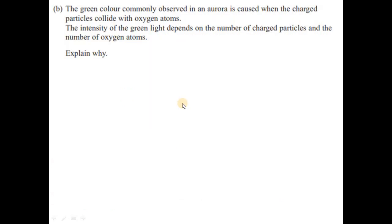The green color commonly observed in an aurora is caused when charged particles collide with oxygen atoms. The intensity of the green light depends on the number of charged particles and the number of oxygen atoms. Explain why.